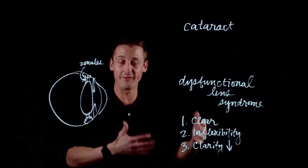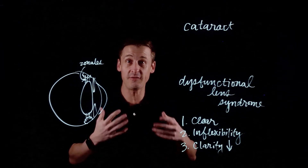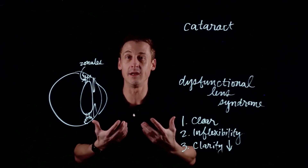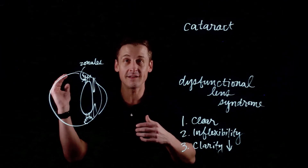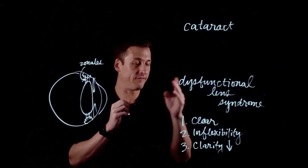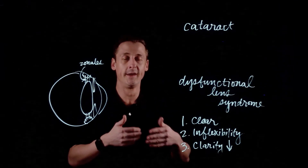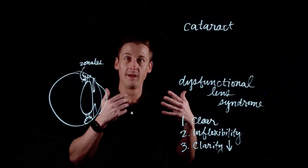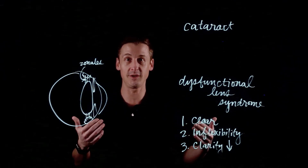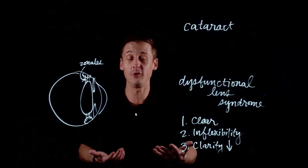Fast forward that same eight-year-old to age 58 and instead they have to hold a cell phone over a menu to shine light on it just to be able to see it. The difference between those two situations is not the retina — it's all the lens, because it's filtering out incoming light. That is the final stage of dysfunctional lens syndrome, because as clarity continues to decrease, the lens eventually reaches the point where even with pretty good lighting we can't see what we need to. At that point, we've officially moved on to having a cataract — when you can no longer see well enough to do what you want to do.